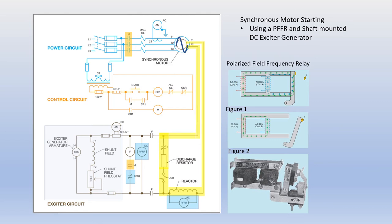As the motor accelerates closer to synchronous speed, the frequency of the rotor circuit induced current will be reduced. This lower frequency will change the inductive reactance of the reactor coil, which is in parallel with the polarized field frequency relay AC coil. The lower inductive reactance will cause less induced voltage dropped across the reactor, resulting in lower current through the PFFR AC coil. In addition, as the motor accelerates, the inrush current is reduced, resulting in a weaker flux field interacting with the rotor windings. The polarized field frequency relay will no longer have enough magnetic field from the AC coil to remain pulled in. The DC coil magnetic field will then take over and saturate the core, and the normally closed PFFR contact will close, as shown in figure two on the right.